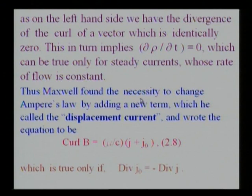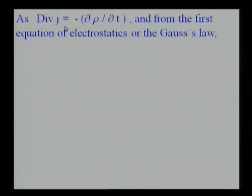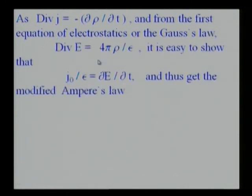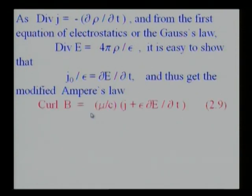Thus, Maxwell found the necessity to change Ampere's law by adding a new term, which he called a displacement current, and wrote the equation to be curl of B should be mu upon C times J plus J0, which is true only if divergence of J0 is minus divergence of J, because the left side divergence should be zero. Therefore, as div J is minus delta rho by delta T, and using Gauss's law divergence of E equals 4π rho by epsilon, it is easy to show that J0 upon epsilon is delta E by delta T. Thus one gets the modified Ampere's law: curl of B is mu by C times J.